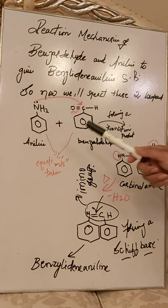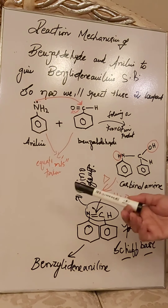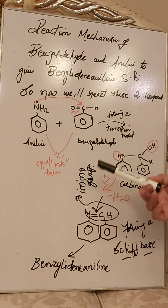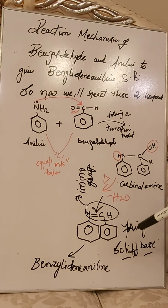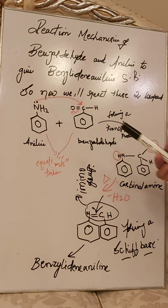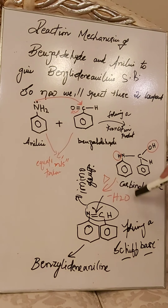In the experiment, we took equal amounts of aniline and benzaldehyde in a china dish, then heated them. The carbinolamine intermediate was present for some time. When you observe oily globules mixed with water on the surface of the china dish, that indicates condensation is occurring.